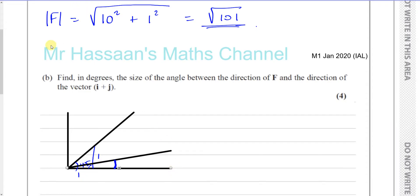So, they want you to find the angle between F. This is the direction of F and this is the direction of i plus j. They want you to find the angle between them, which is the angle over here. So, the total angle is 45, the whole thing is 45, and we want to find what this angle is. Let's call it angle X.